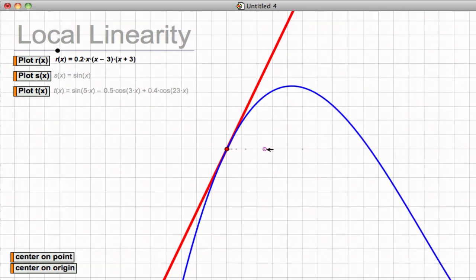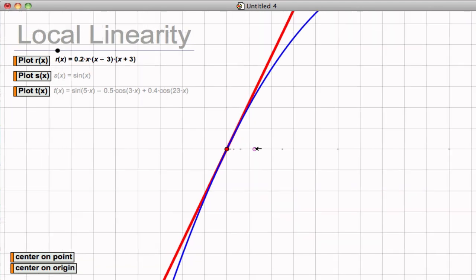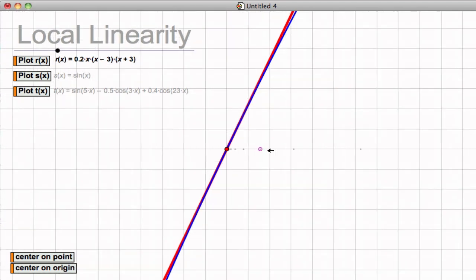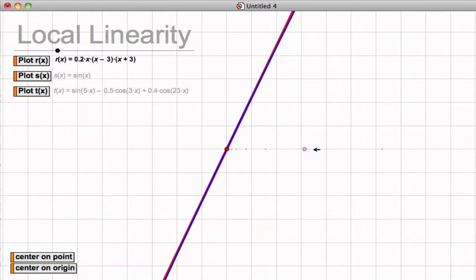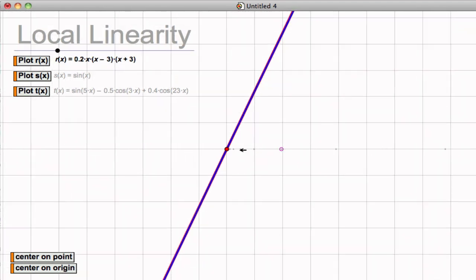it's saying that a differentiable function behaves like this, so that the closer you look, the more and more the curve actually acts like a line at any given point, if it's differentiable.